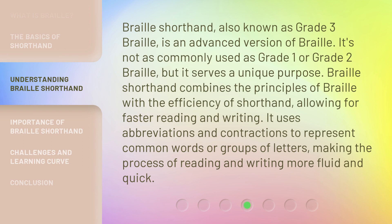Braille Shorthand, also known as Grade 3 Braille, is an advanced version of Braille. It's not as commonly used as Grade 1 or Grade 2 Braille, but it serves a unique purpose. Braille Shorthand combines the principles of Braille with the efficiency of shorthand, allowing for faster reading and writing. It uses abbreviations and contractions to represent common words or groups of letters, making the process of reading and writing more fluid and quick.